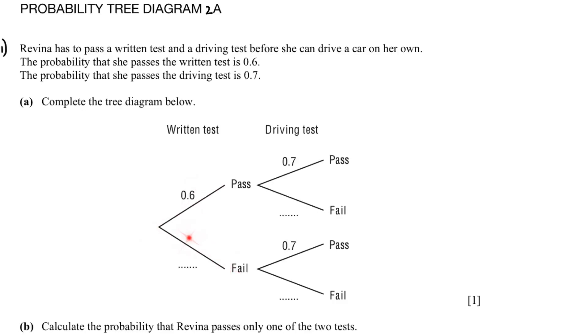Before we begin, you should know that for each branch when we add the probabilities it should equal to 1. If she passes the written test at 0.6, so fail will be 1 minus 0.6 which gives us 0.4. For the driving test, if she passes it is 0.7, so if she fails it will be 1 minus 0.7 and that gives us 0.3. The same number will come here.